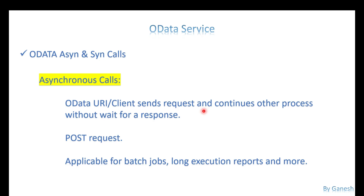Asynchronous calls are not supported by the GET method — it's POST only. Asynchronous calls are mostly required for batch jobs. Batch jobs don't require an immediate response because they may take a longer period of time. We don't want to wait till the batch job ends; instead we can get a confirmation like a 202 response — meaning your request is received.